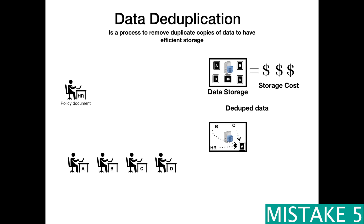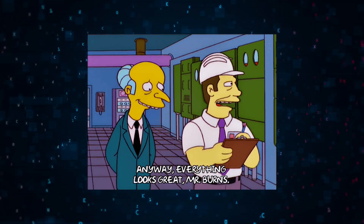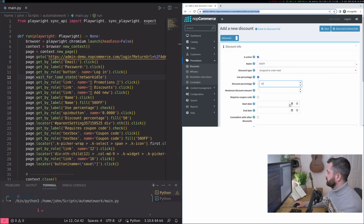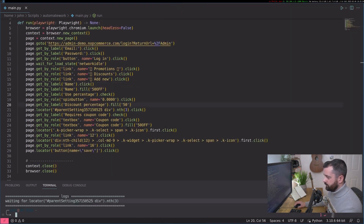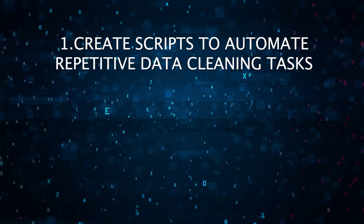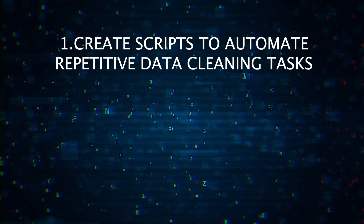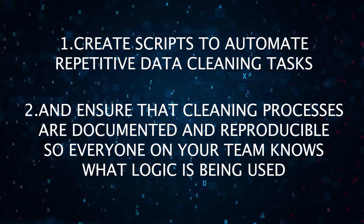So those are five common mistakes — what do they all have in common? Most involve manual inspection and a manual fix. Why not automate as much as possible? Like software developers who use unit tests to ensure their work meets requirements, you should do the same for data science. Create scripts that automate all data cleaning tasks and run them at every step of your process — that will surely reduce the mistakes you make. Also, ensure the cleaning process is documented and reproducible so everyone on your team knows exactly what business rules and logic you used.